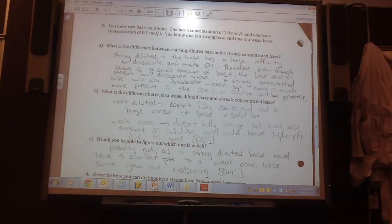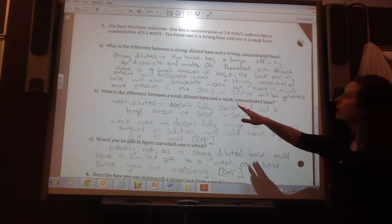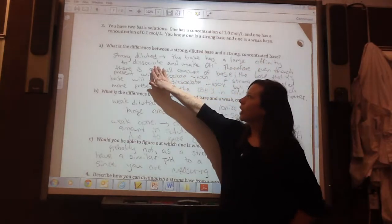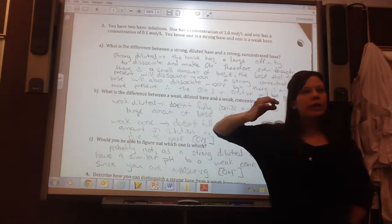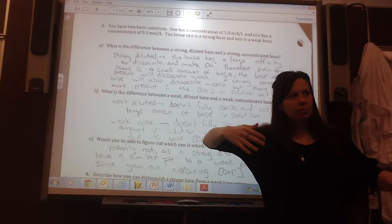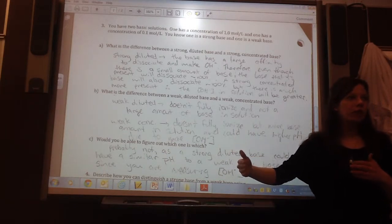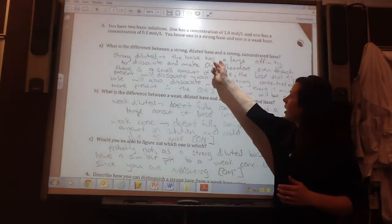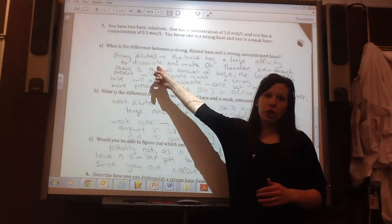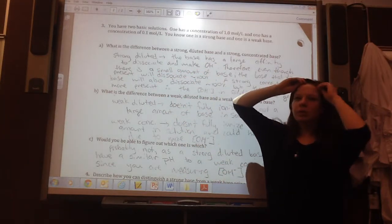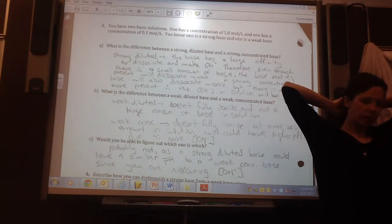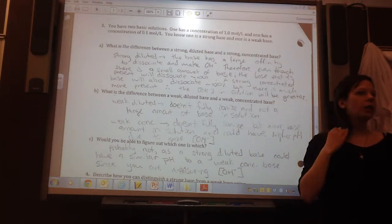Number three is kind of similar, but I ask you several questions to kind of get you to part C. So, what's the difference between a strong diluted base and a strong concentrated base? Well, a strong diluted base, the base has a large affinity to dissociate. This is really kind of important diction to use because you want to explain that the base will go to making OHs easily. But the way you describe that, and I want you to use this diction, so if you didn't have it written in, write this down exactly. The strong base has a large affinity to dissociate, meaning that it really wants to dissociate.